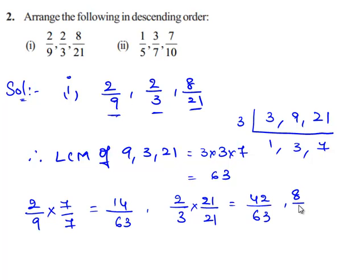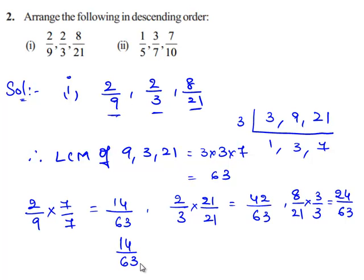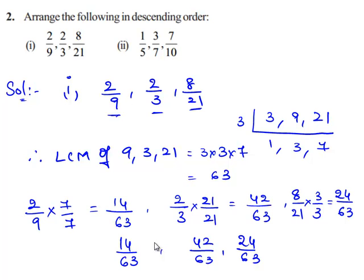Now we obtain the equivalent fraction for 8 by 21. We multiply 8 by 21 by 3 on both numerator and denominator, giving us 24 by 63. Now we compare the 3 equivalent rational numbers: 14 by 63, 42 by 63, and 24 by 63. Since all 3 have a common denominator, we directly compare the numerators: 42 is greater than 24, and 24 is greater than 14.